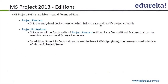MS Project is available in two different editions: Project Standard and Project Professional. Standard is the entry-level desktop version which helps create and modify a project schedule. Professional includes all the functionality of Project Standard plus a few additional features. In addition, Project Professional can connect to Project Web Application — PWA — the browser-based interface of Microsoft Project Server. Those are the advantages of Project Professional versus Project Standard.